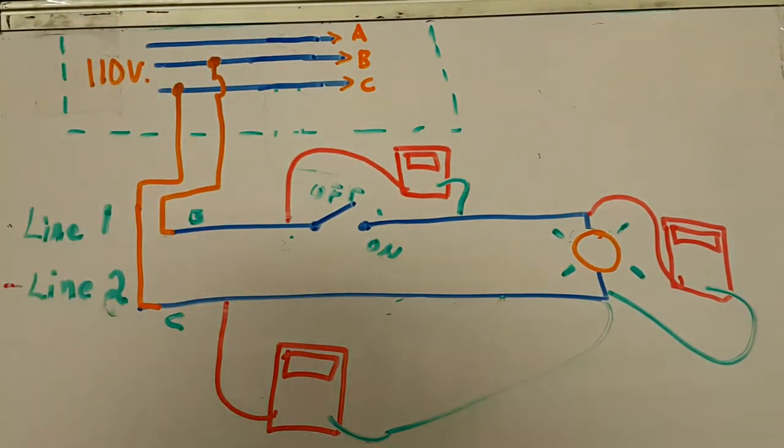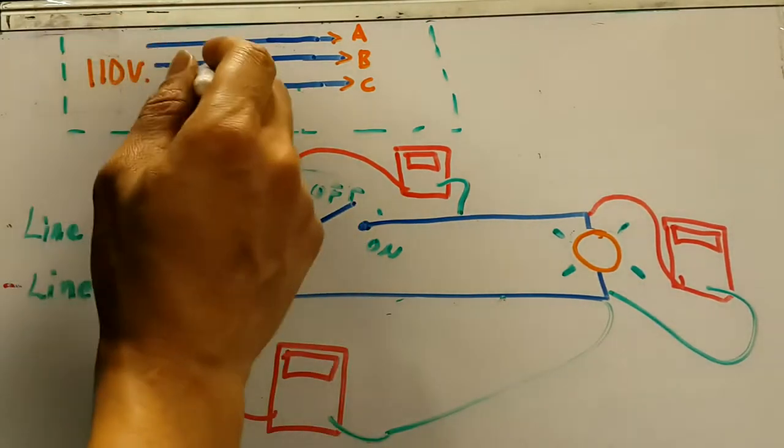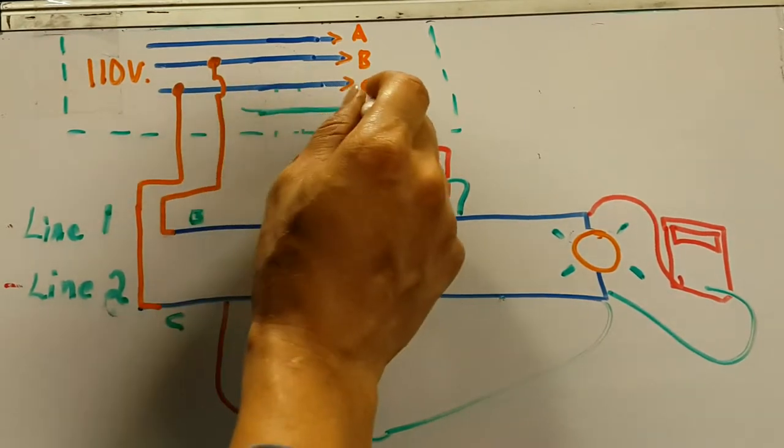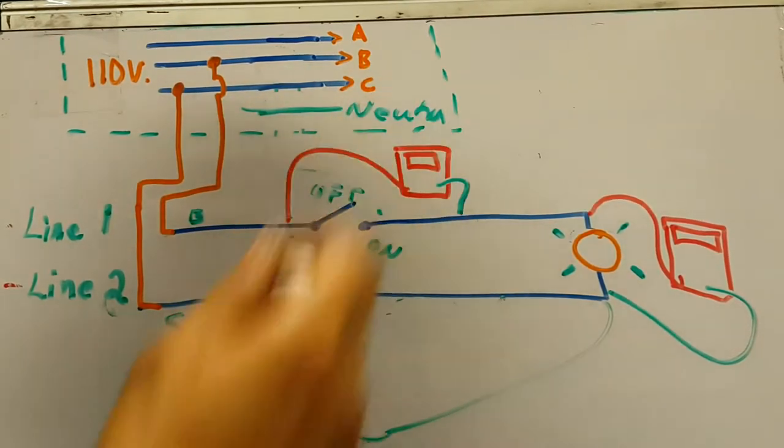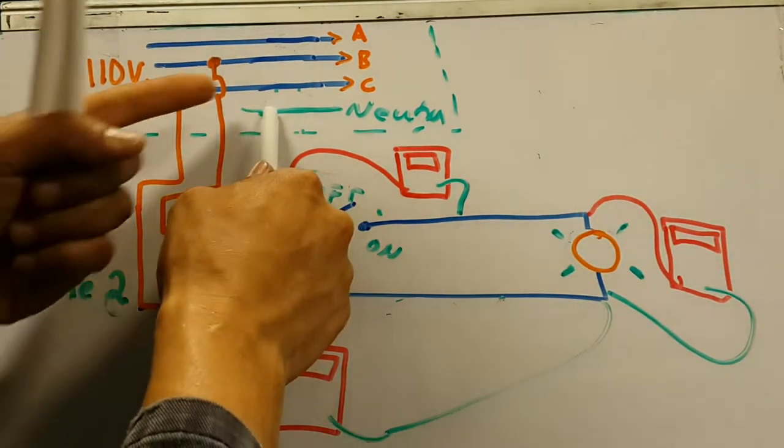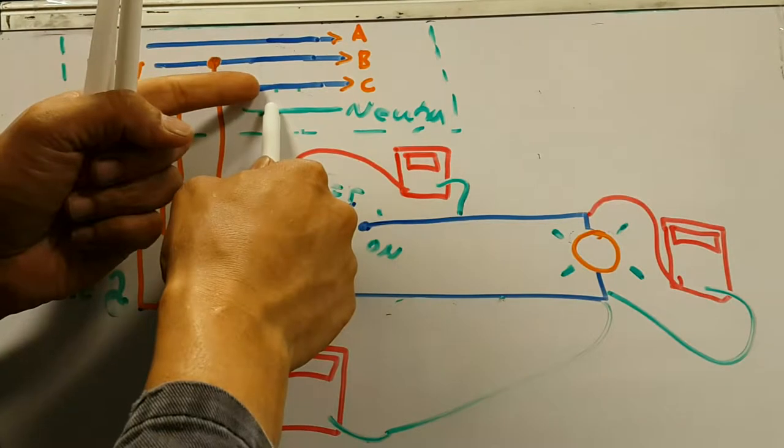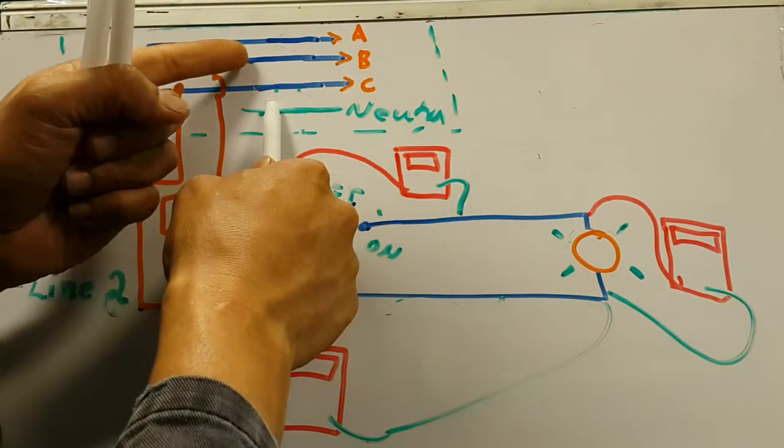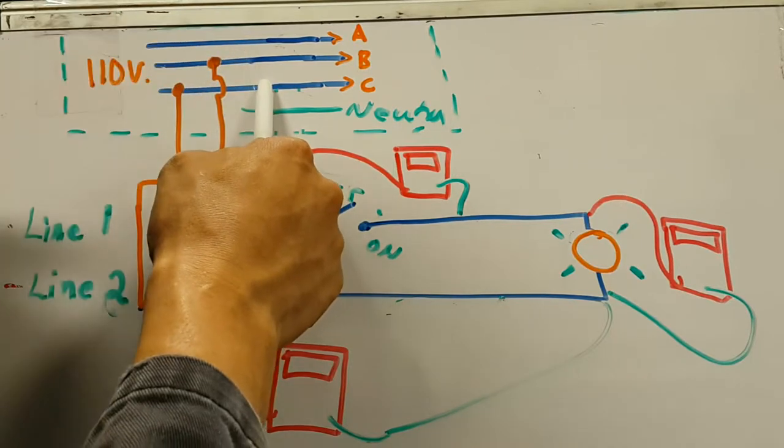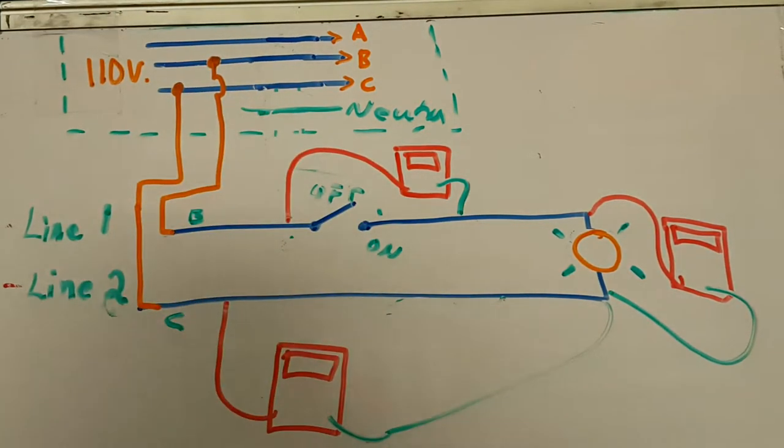Now, be careful, because if you're trying to use some civilian knowledge, in civilian systems, they get an extra wire, which is called a neutral. The way that works is neutral to Charlie phase will be 110 volts, neutral to B phase will be 110 volts, but Charlie to Bravo will be 220 volts. That's not what we do on board ships.